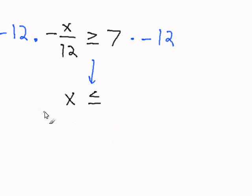Now, I simply continue on with my problem. Negative 12 times negative x over 12. The 12s will cancel out and the negative times a negative will leave you a positive, and x will be by itself. Then 7 times negative 12 will become negative 84.